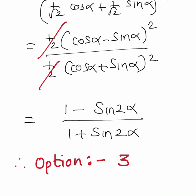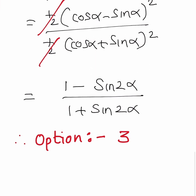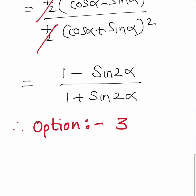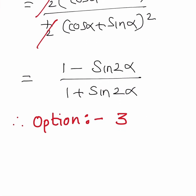From trigonometry we know that cos alpha minus sin alpha whole square is equal to 1 minus sin 2 alpha, and cos alpha plus sin alpha whole square is equal to 1 plus sin 2 alpha. Therefore the answer is 1 minus sin 2 alpha by 1 plus sin 2 alpha.